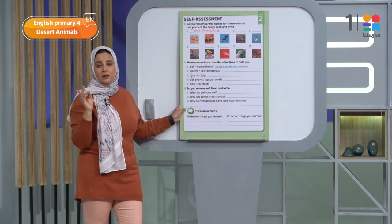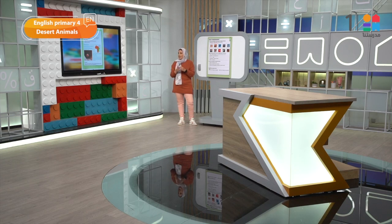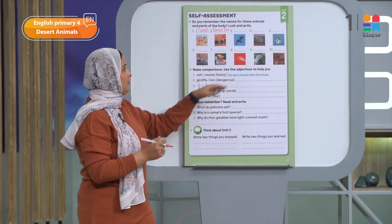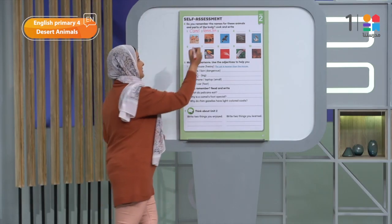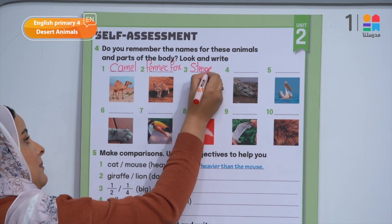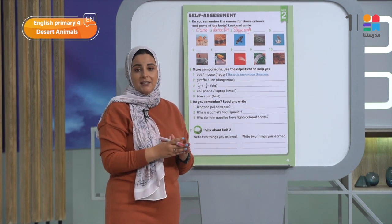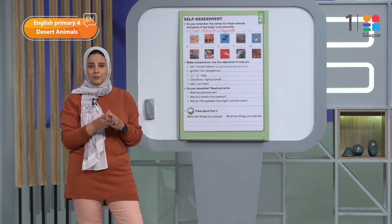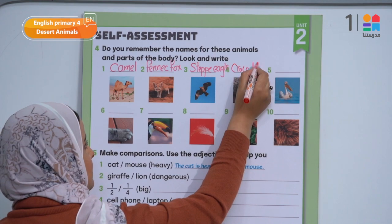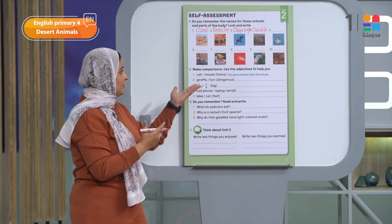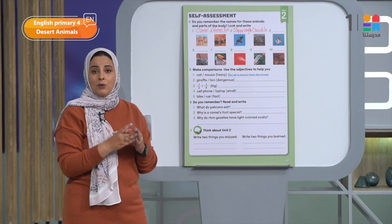المرة اللي فاتت قلنا علشان ابتدي جملة لازم ابتدي بcapital letter ولازم احط الصين بتاعتي at the end — سواء full stop، question mark، أو exclamation mark. هنا مش هعمل ده لأن مش بكتب sentence، بكتب phrase أو word. يبقى مش لازم ابتدي بcapital letter. Number three: it's the steppe eagle. Number four: it's the crocodile — a very dangerous animal.